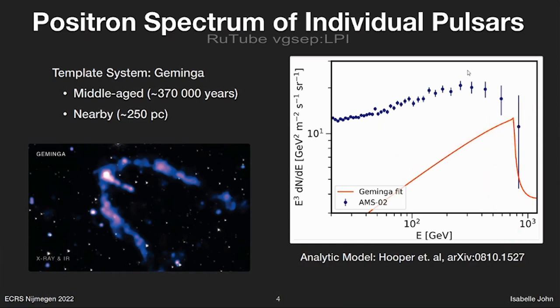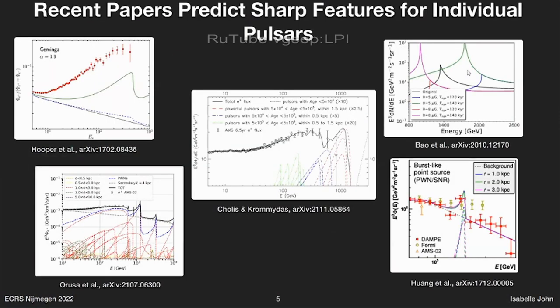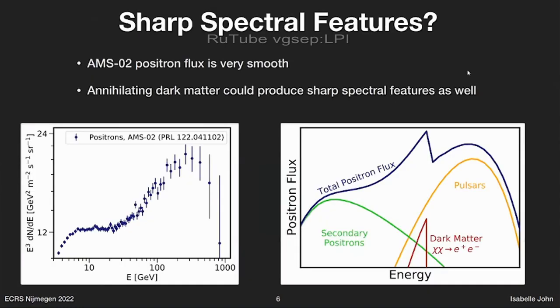This sharp feature is actually very common across many papers that model the contribution of an individual pulsar. As you can see in these plots, many of them show these sharp features — though it depends on the exact parameters chosen. This is puzzling because we said the positron flux is very smooth, so we don't necessarily expect any major sources to introduce such a sharp feature. And since annihilating dark matter would also produce a sharp spectral feature, we really want to understand the pulsar sharp spectral feature so we can distinguish it from dark matter, should we ever see one.